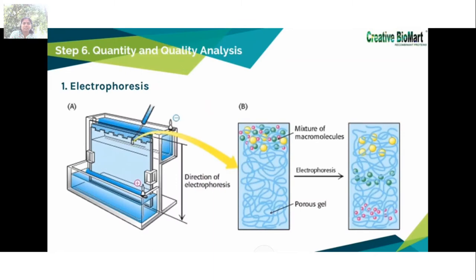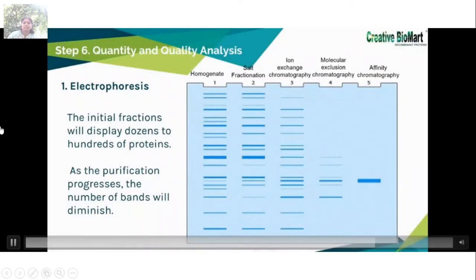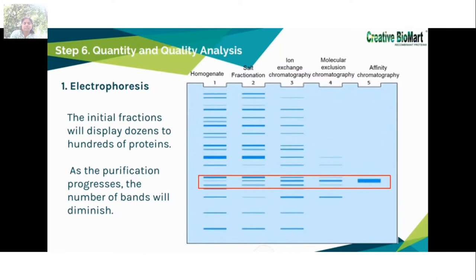After all purification steps, how do we know if our purification scheme is effective? Apart from specific activity rising at each purification step, another method is using electrophoresis to display the target protein at each step. Proteins can be separated largely on the basis of mass by SDS-polyacrylamide gel electrophoresis under denaturing conditions — SDS-PAGE is rapid, sensitive, and capable of high resolution. By analyzing a part of each fraction by SDS-PAGE, the initial fractions will display dozens to hundreds of proteins; as purification progresses, the number of bands diminishes and the prominence of one band increases, corresponding to the protein of interest.